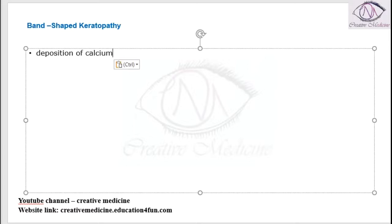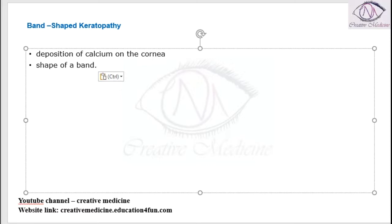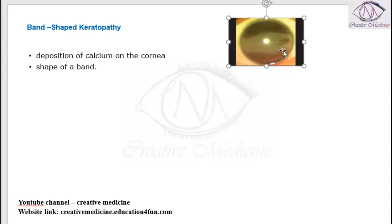Band-shaped keratopathy occurs mainly due to the deposition of calcium on the cornea. This deposition occurs in the form of a band, and thus it is called band-shaped keratopathy.